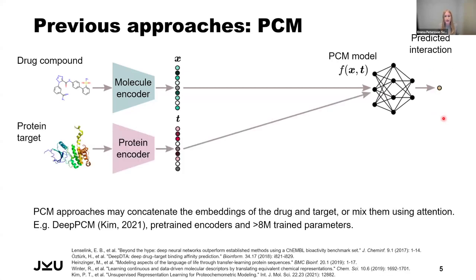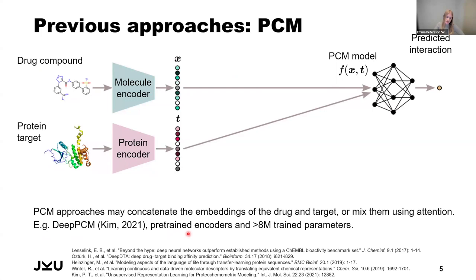Instead, the field of proteochemometrics modeling has come up in more recent years. This field lets the model take into account also the information about the protein target, encoded in some way. A common approach is to encode the drug compound and protein target respectively, and then concatenate these two embeddings and process them with some model, for example a fully connected model. One example is the DPCM model, which uses pre-trained encoders for the drug compound and protein target, respectively. These are frozen and not trained during the procedure, and the model ends up with around 8 million trainable parameters.